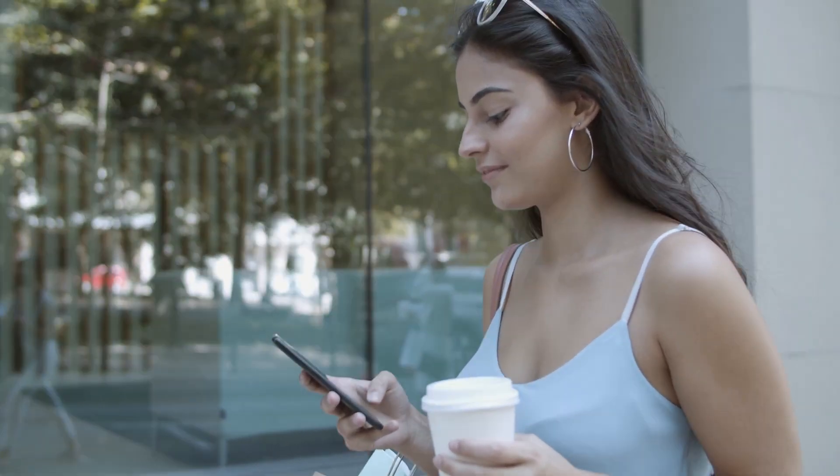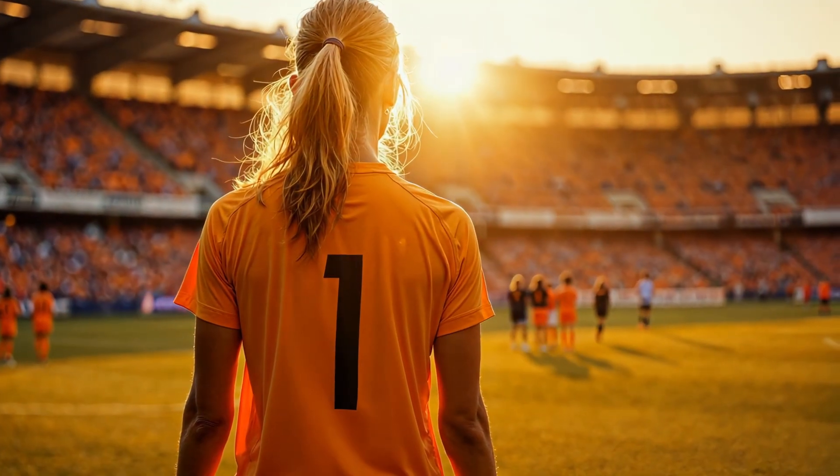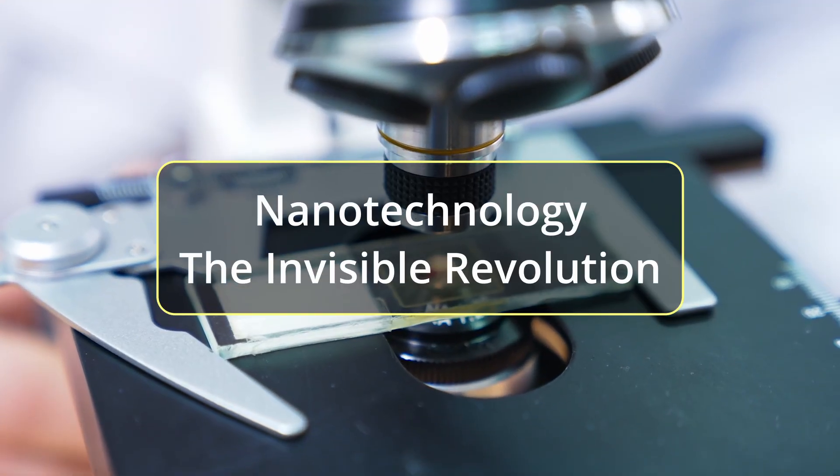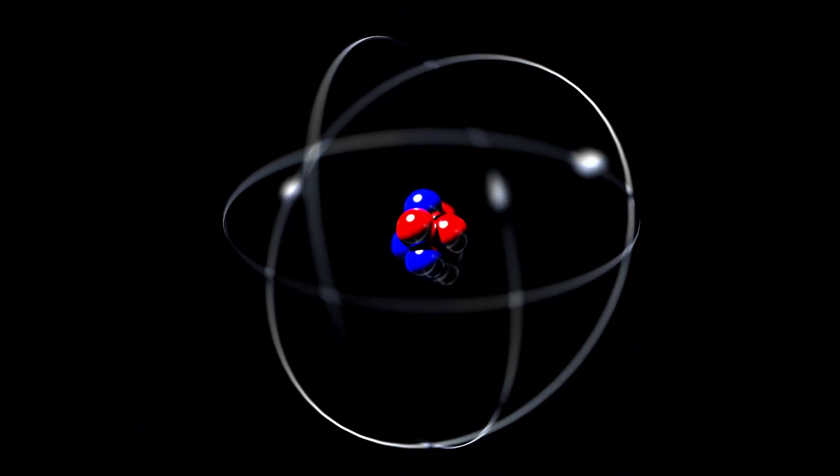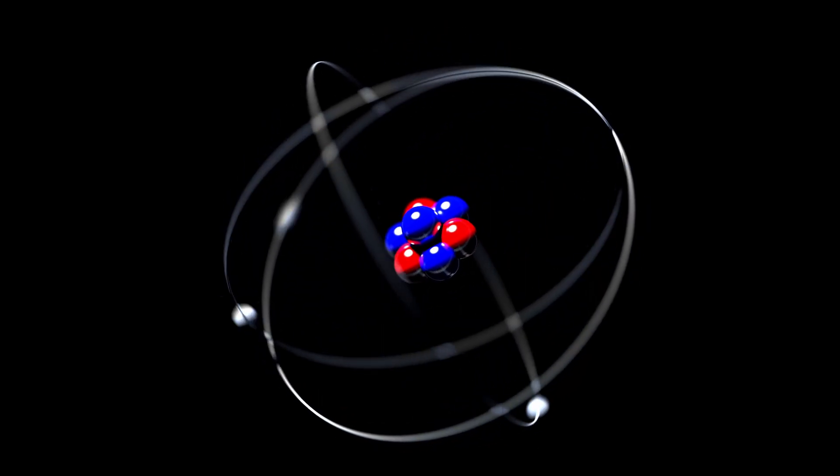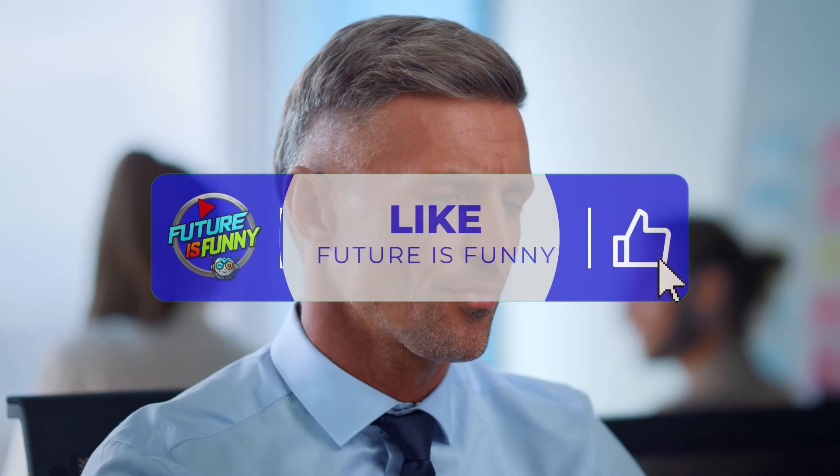Have you ever thought that the smartphone in your hand, the sunscreen you use at the beach, or even the sports jersey you're wearing might be hiding an invisible revolution? We're not talking about magic, but about nanotechnology. What lies behind this technology that's everywhere, yet we can't see it? The answer is in a science that's already rewriting the rules of our world, one atom at a time. If you want to discover what's behind the technology you use every day, stick with me until the end. And while you're at it, hit that like button to support science communication.